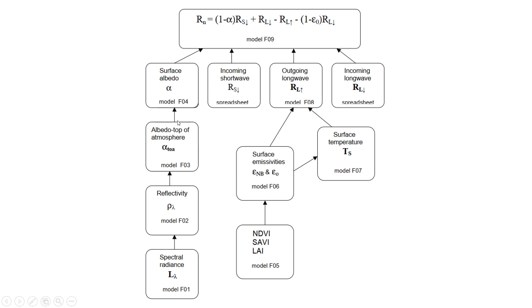To compute surface albedo, we need to go through four steps. First, compute spectral radiance (model F01) for each band. From each spectral radiance, compute reflectivity (model F02) for each band. Then compute top-of-atmosphere albedo (model F03), and from that, compute surface albedo (model F04). That is four steps just to get surface albedo.